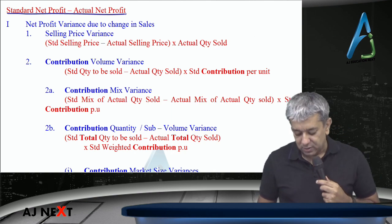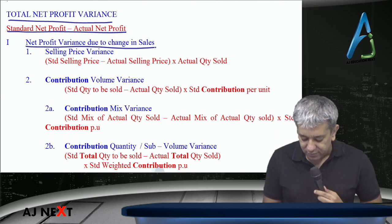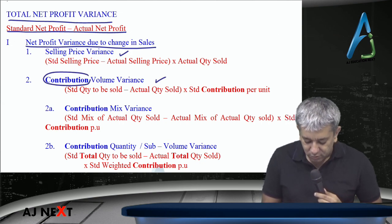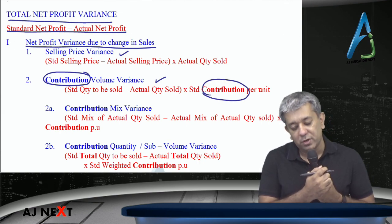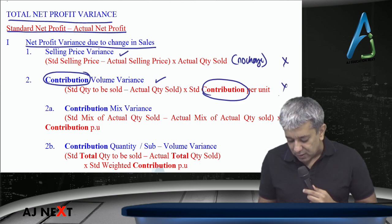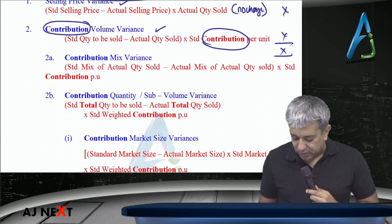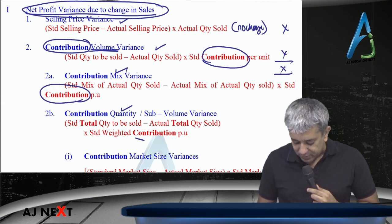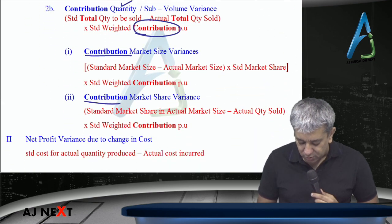Standard net profit minus actual net profit gives total net profit variance. It has two parts: net profit variance due to change in sales, which includes selling price variance and contribution volume variance. When computing contribution volume variance, do not multiply by profit per unit — multiply by standard contribution per unit. Selling price variance remains the same everywhere. Add them up to get this variance. After that, contribution volume is broken into mix and quantity — just replace profit per unit with contribution per unit, no other difference. Then contribution market size and contribution market share.